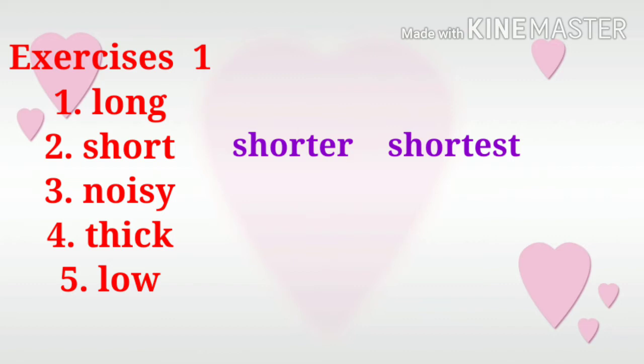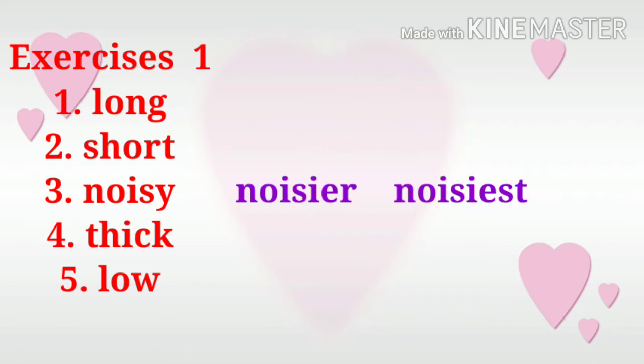Number three: noisy. We're going to make this word in the comparative and superlative degree. From positive degree, noisy becomes noisier — we change Y into I and then we add ER to the word. So the word noisy becomes noisier. Then in the superlative degree, it becomes noisiest — we change Y into I and then we add EST at the end of the word.